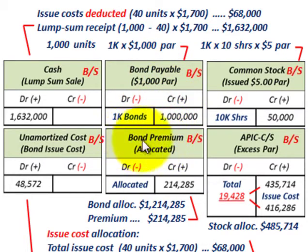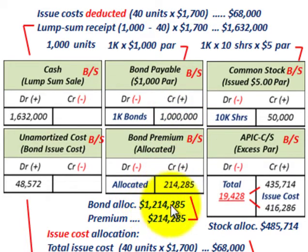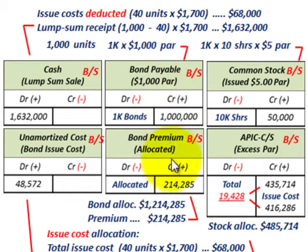Because of the proportional allocation, we have a bond premium to account for. The total amount allocated to the bond was $1,214,285, less the par amount of $1,000,000, gives a premium of $214,285. We have to set up this bond premium account and add it to bonds payable because of how we allocated proportionately.